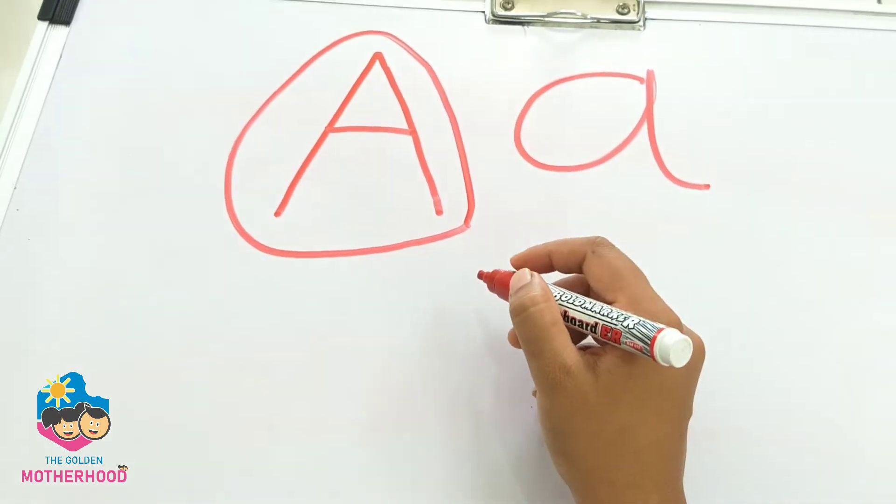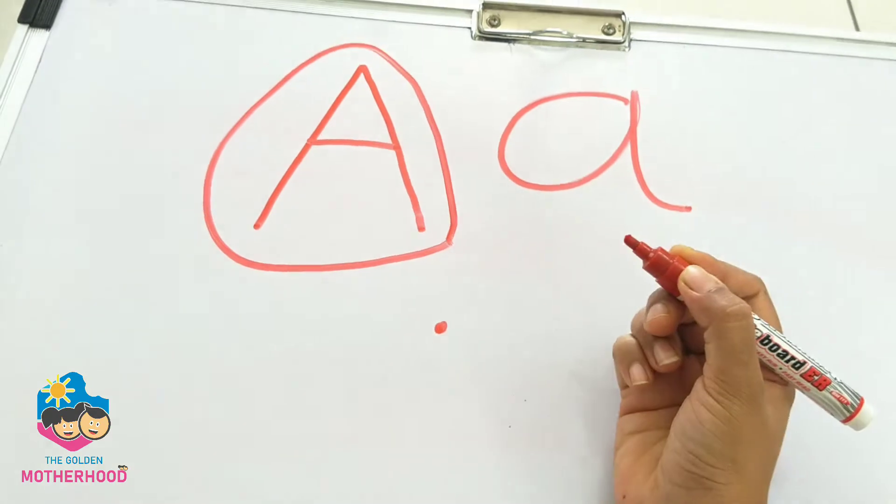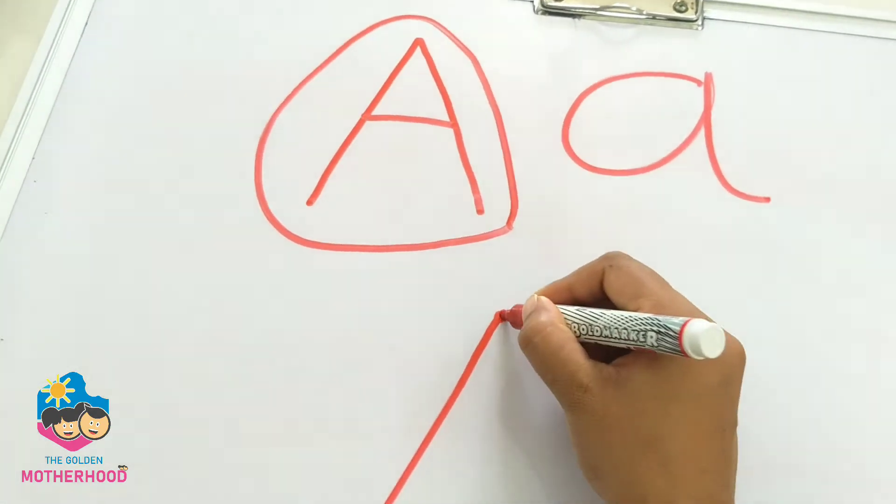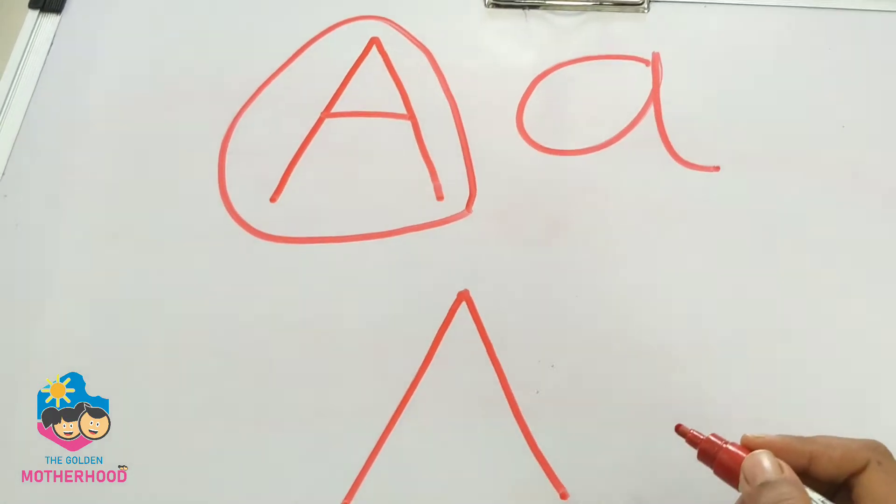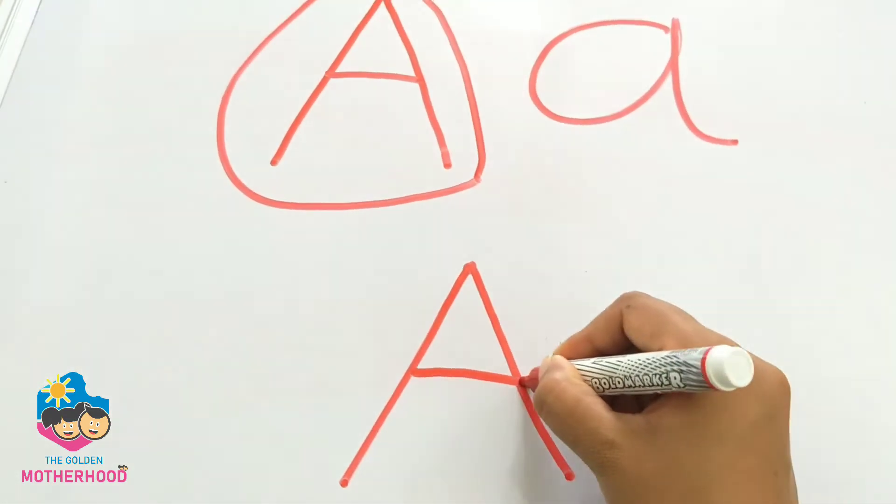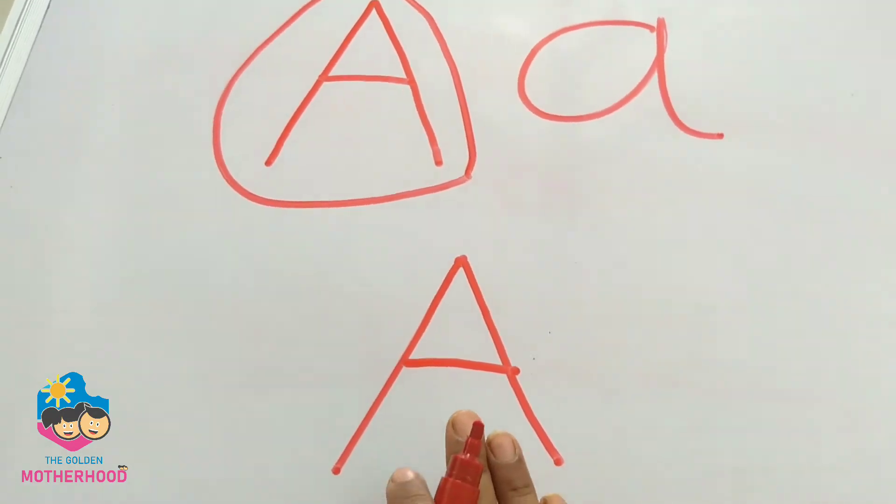So how to write the letter A? Make a dot, two slant lines and one sleeping line. This is the letter A, capital A.